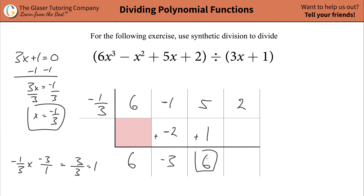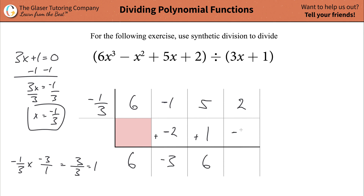Then repeat the procedure: take the six and multiply it by negative one third. We already did that, so we know it's negative two. Plug in negative two there, and then simply add these together for a total of zero. That concludes the procedure of the synthetic division.